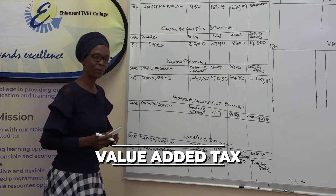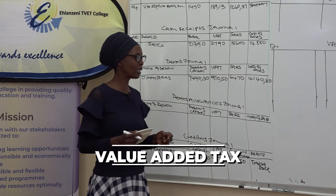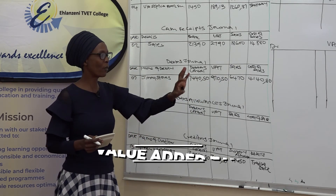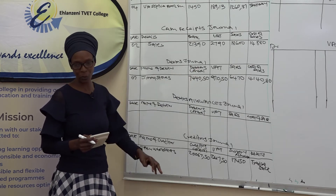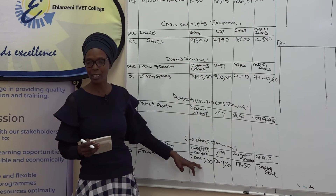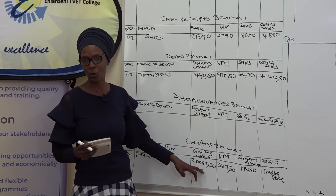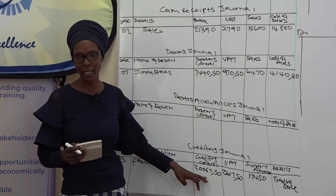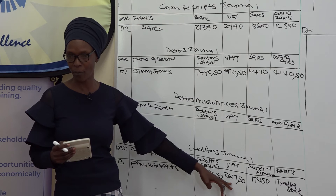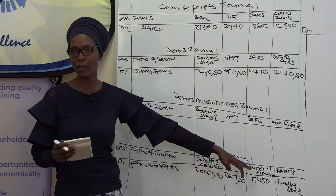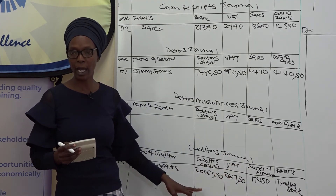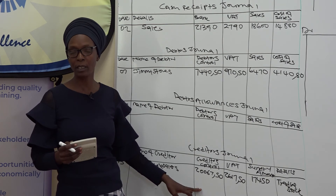We add the sundry amount plus the VAT to enter it under creditors control: R17,450 plus R2,617.50 equals R20,067.50. If the transaction had said the amount was VAT-inclusive, we would start under creditors control, then calculate VAT using the inclusive formula, and subtract to get the column figure.